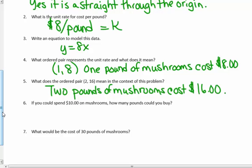If you spend $10 on mushrooms, this is Y. This is the Y, the cost. How many pounds can you buy? So, my Y divided by my K will give me my pounds, which is my X. That's what I have to do. So, 10 divided by $8 per pound will give me 1 and 2 eighths or 1 and a quarter pounds.